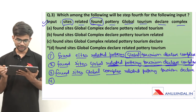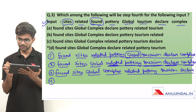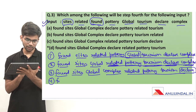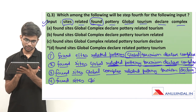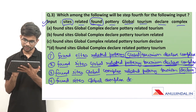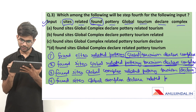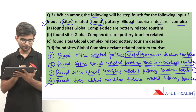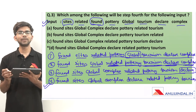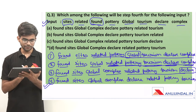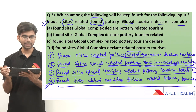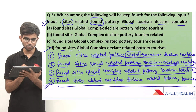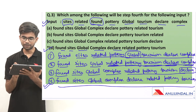From the remaining 4 words, 'declare' will come next according to the dictionary. Step 4 is: found, sites, global, complex, declare, related, pottery, and finally tourism. In the question we were asked what will be the 4th step. So this is the 4th step. The correct option is option D: found, sites, global, complex, declare, related, pottery, tourism.